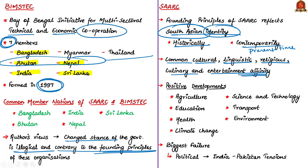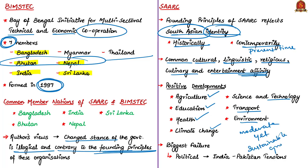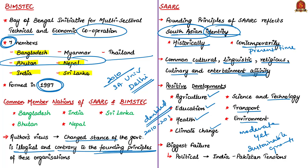Looking at positive developments of SAARC, it is particularly relevant in fields of agriculture, education, health, climate change, science and technology, transport and environment. The author says each of these areas has seen moderate but sustainable growth in cooperation. For example, since the South Asian University began in New Delhi in 2010, the number of applicants has more than doubled between 2010 and the present time.